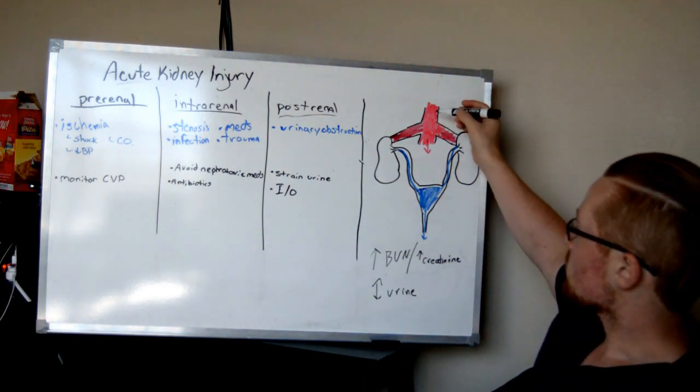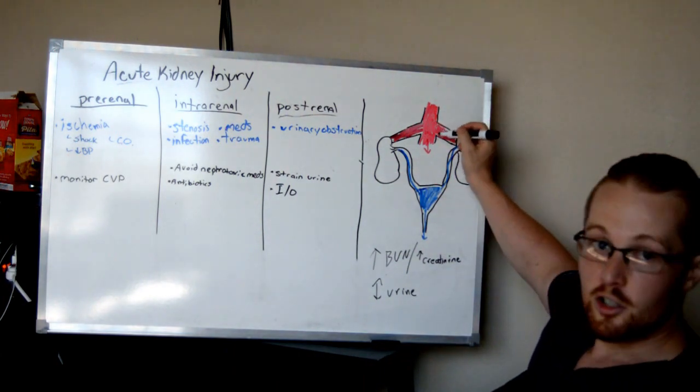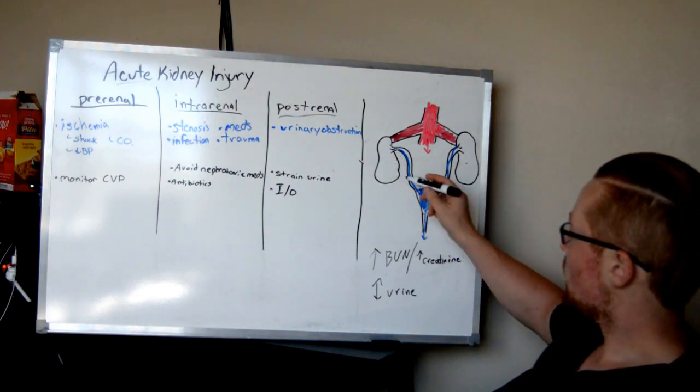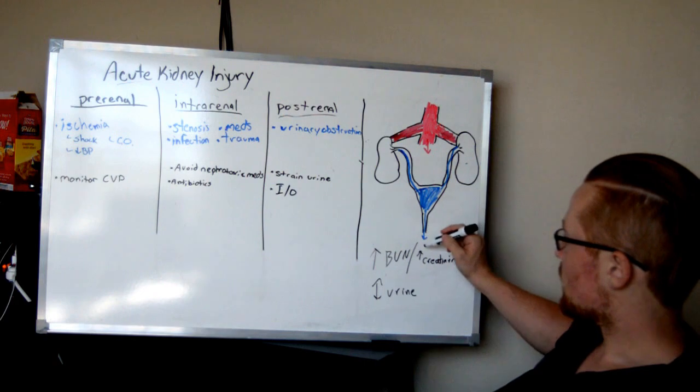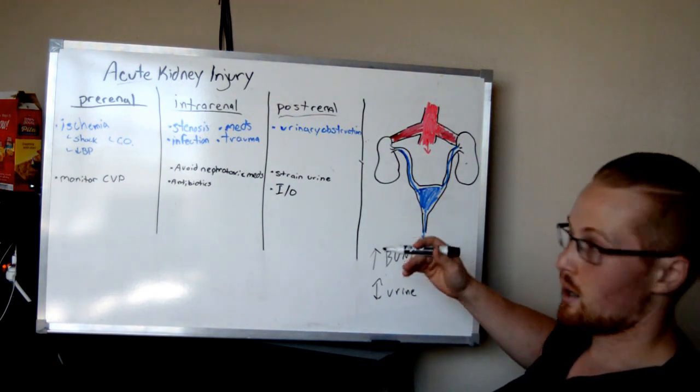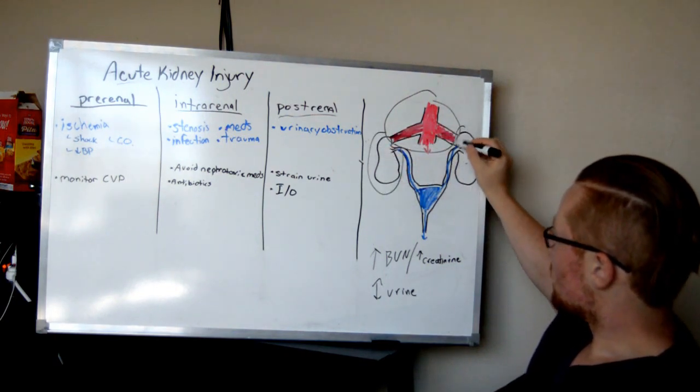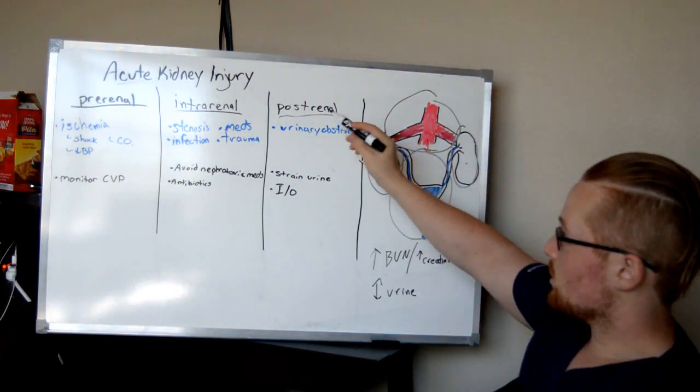Let's look at my diagram first. So here we have the arteries that are supplying the kidneys. Here you have the kidneys themselves. And then you have the urinary system, which is the ureters, bladder, urethra, and the rest of the way out. So these three are going to be the three different categories for acute kidney injury.